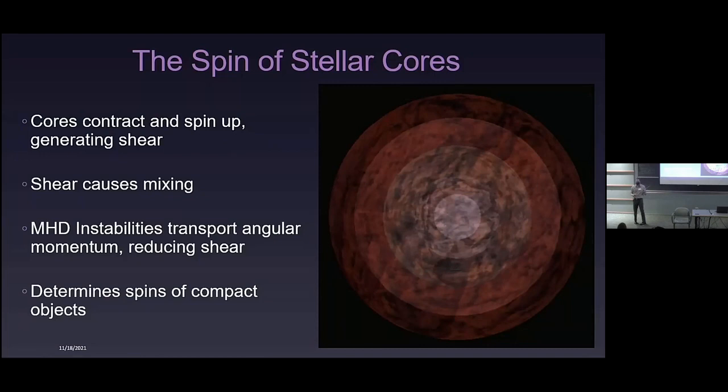That process is extremely important for understanding both the level of differential rotation and shear mixing inside of stars, but also things like the spins of compact objects — white dwarfs, neutron stars, black holes born out of the cores of stars. If you just look at the angular momentum in the core of a main sequence star and assume it's conserved into a compact object, you typically predict extremely rapid rotations, which is not what we see. Clearly a lot of angular momentum is transported within stars as they evolve.